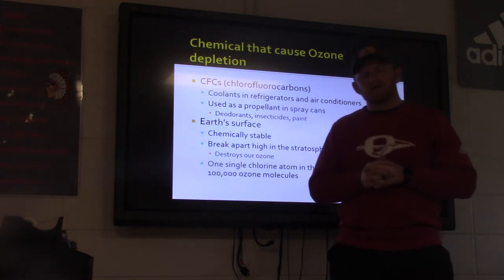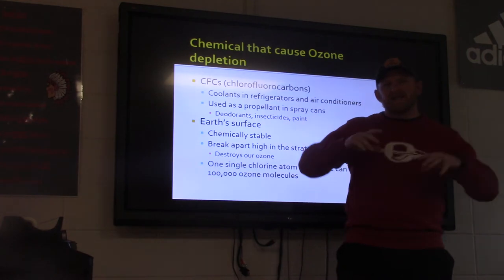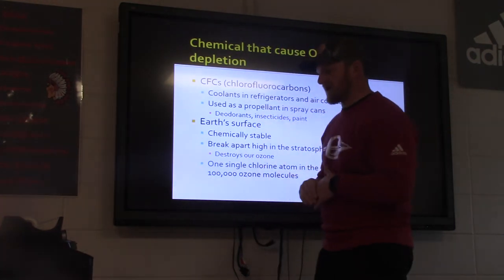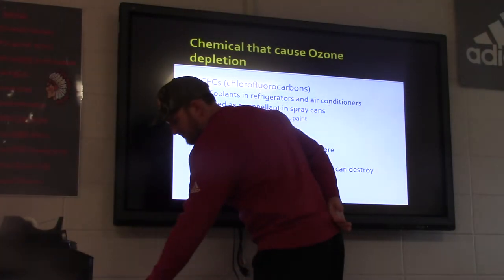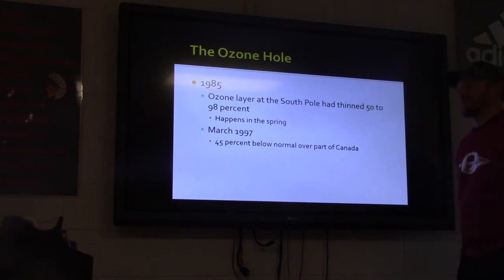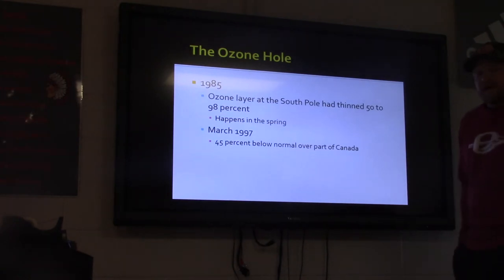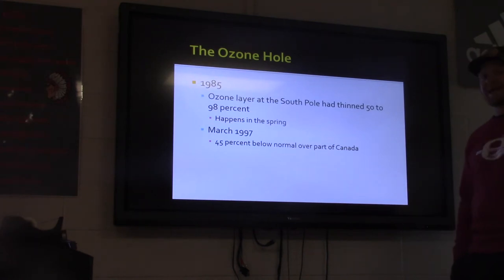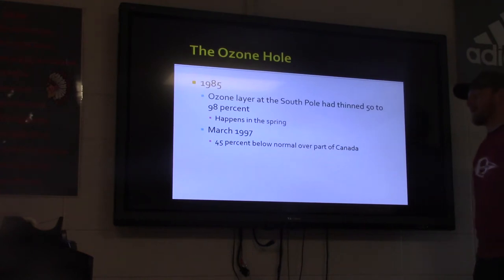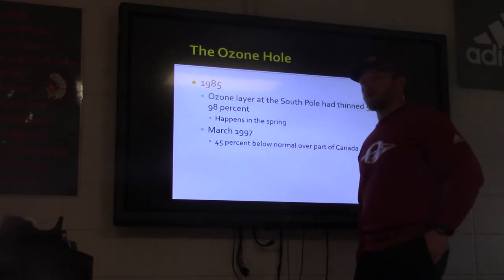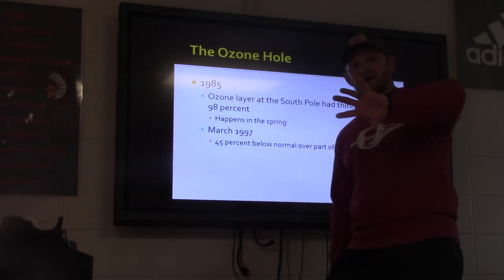When you do your ozone layer WebQuest, you're going to see that over the past 15 to 20 years, the ozone layer has gotten much, much better. In 1985, the ozone layer at the South Pole was thin from 50 to 98% — this happens every springtime, really late winter for us. In March 1997, it was 45% below normal over part of Canada. We want that hole to only be over Antarctica and South America.